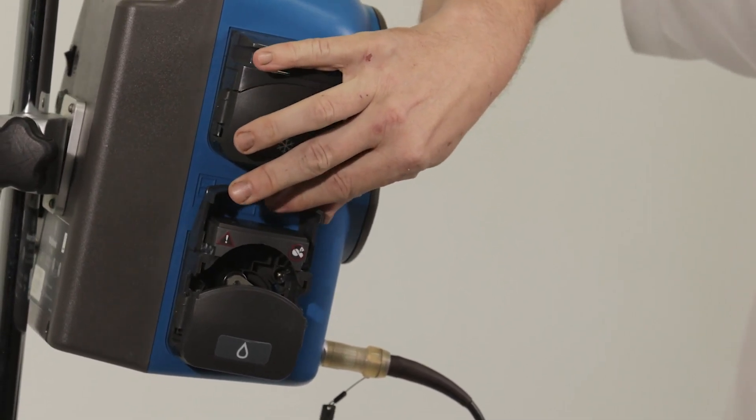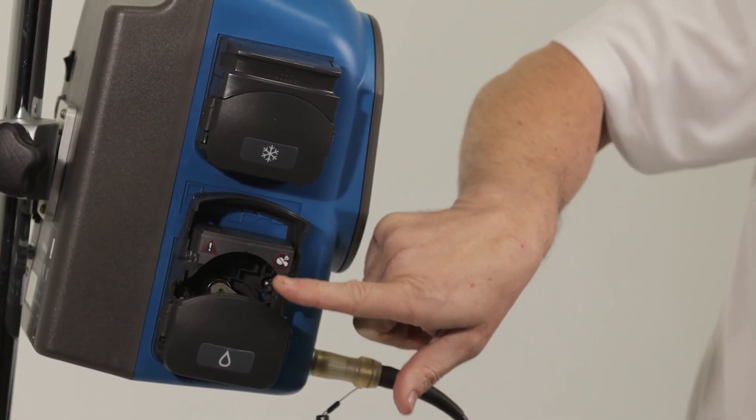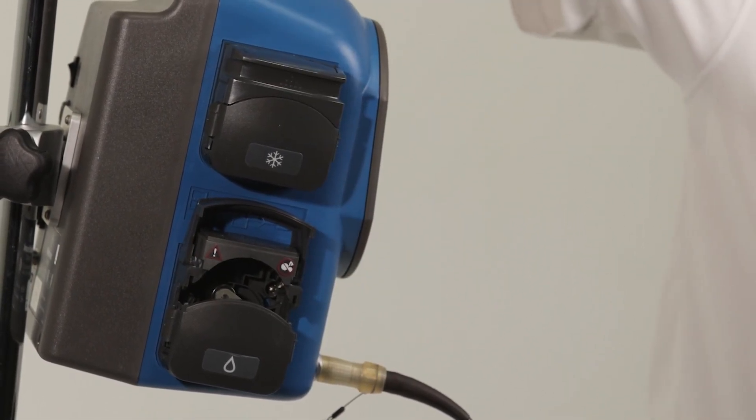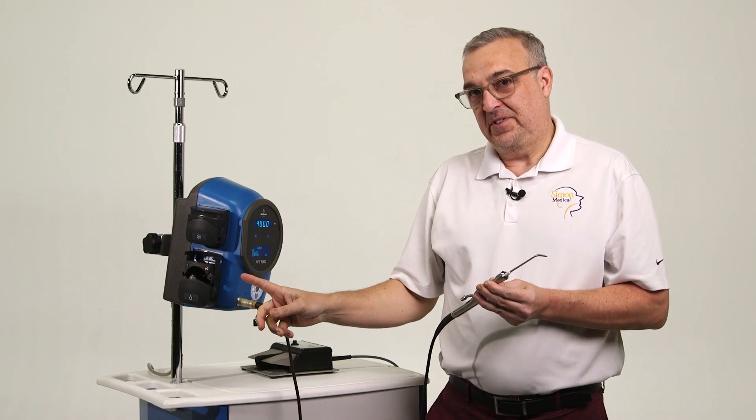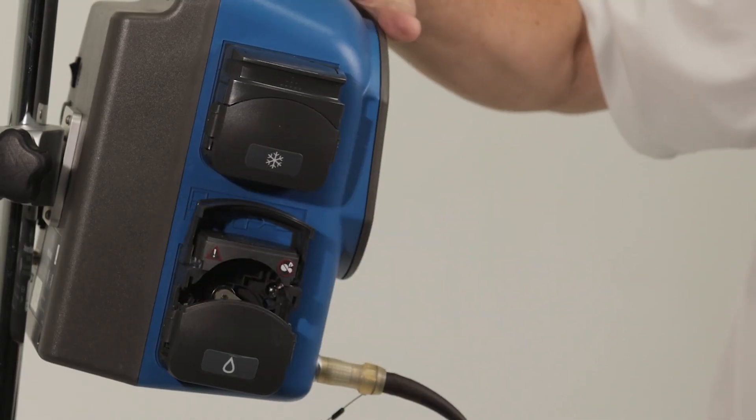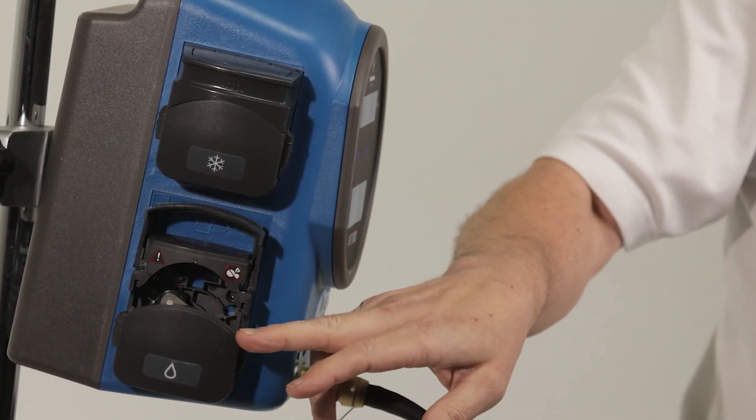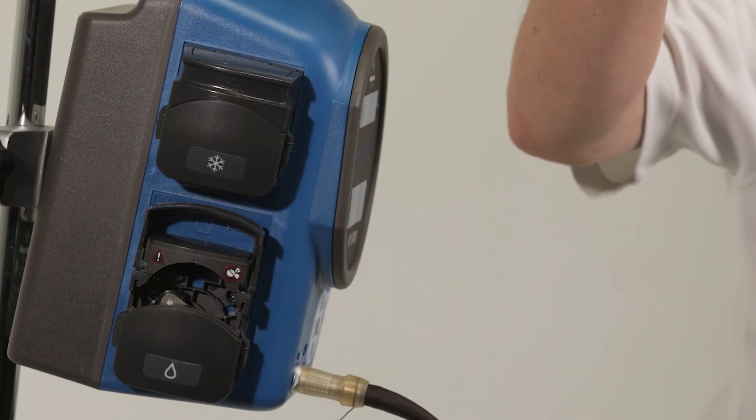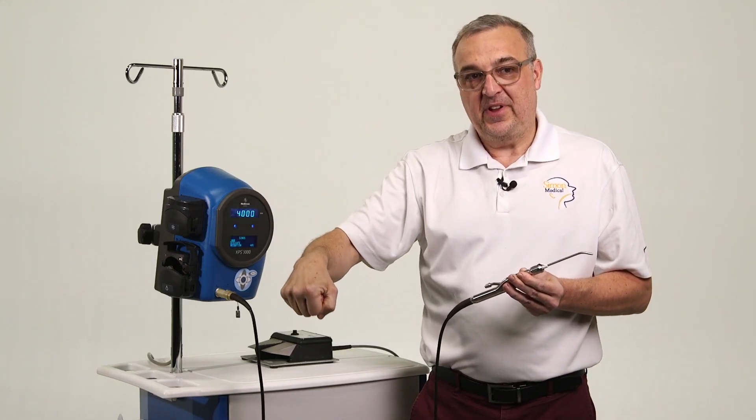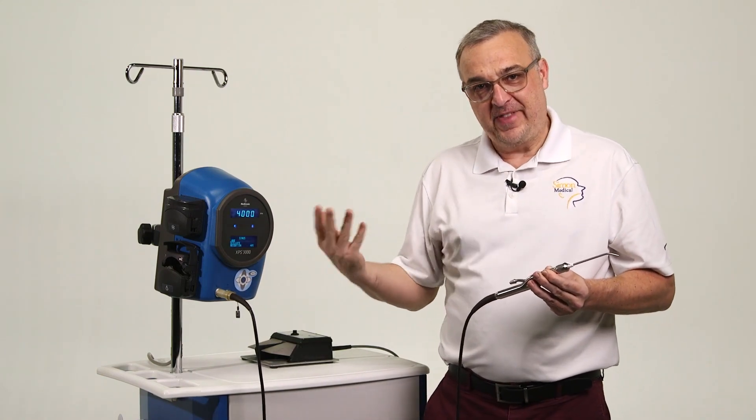You open this up. Irrigation tubing will slide in this opening and into our saline bag up here. One caveat I would say, when you put the irrigation tubing through here, you need to make sure it's centered. If it's off center, there are some tight lips here and it can get stuck in those tight lips and then you won't have irrigation. So just be cognizant of that.